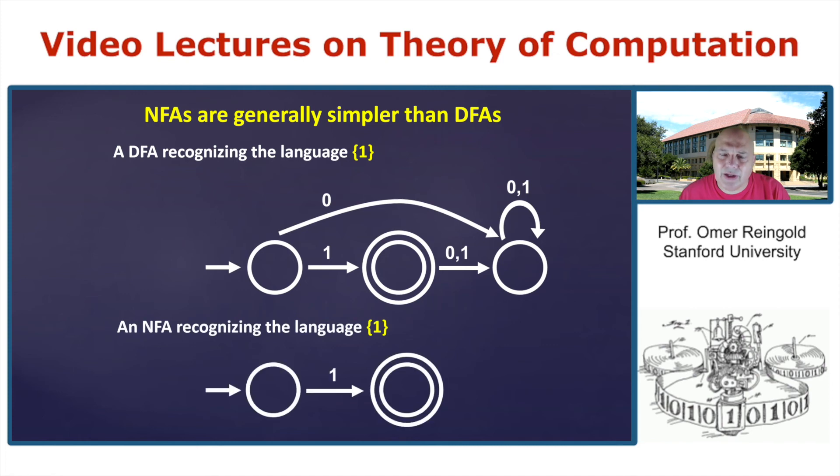An NFA for the same language is just that. You have a start state. With one, you move to accept state. And now you don't need to worry about what happens with a zero here or with a zero later, because there are no zero transitions. And therefore, anything with a zero or with more than one one would not be accepted by the NFA. So it's simpler.